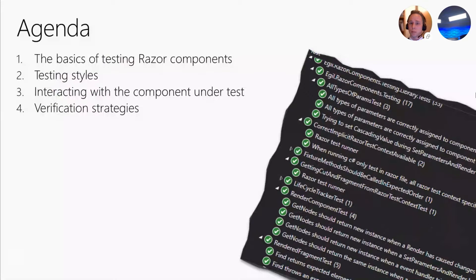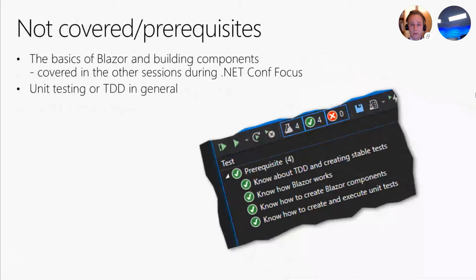First, I'm going to talk about the basics of testing Blazor components. Secondly, I'm going to show you different styles we can use when testing our components. Then I will show you how to interact with the component under test. And finally, we will look at different verification strategies available to us. This session will not cover the basics of Blazor nor how to build custom components in Blazor, and I also won't be talking about unit tests in general or test-driven development.